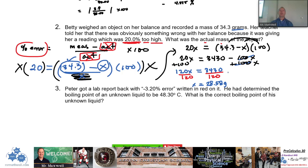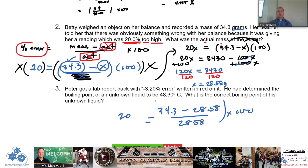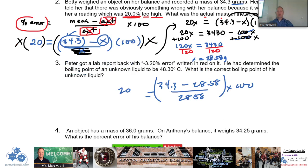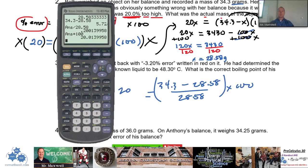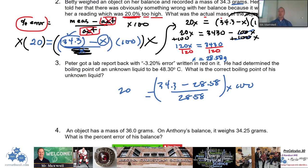So we could check that out real quick. We go: (34.3 − 28.58) / 28.58 × 100 — that should give us 20 if this is correct. Checking on the calculator: 34.3 minus 28.58, divided by 28.58, times 100 — that's 20.013. So it's a little off to the hundredth of a percent, but that's close enough. We rounded, so 28.5833 — if we kept all the decimals we'd be exactly 20. So there's your answer.